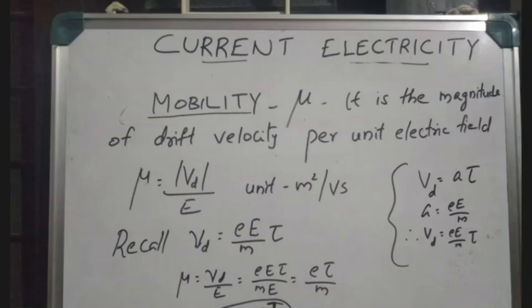The unit of mobility is meter square per volt second. Drift velocity has unit meter per second, and electric field has unit volt per meter. Dividing meter per second by volt per meter gives meter square per volt second — that is the unit of mobility.